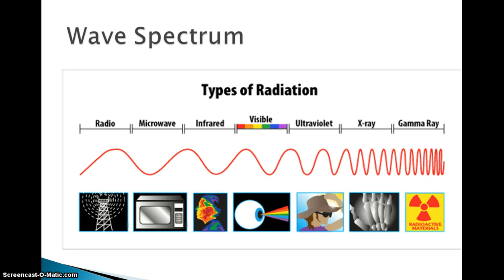The wave spectrum — also called the electromagnetic spectrum — covers different types of radiation. Radio waves have a much longer wavelength than gamma rays. In the visible light range, red has a longer wavelength and purple has a shorter wavelength. Gamma rays have incredibly short waves and are packed full of energy; the more waves that pass by per second, the more energy the wave carries.